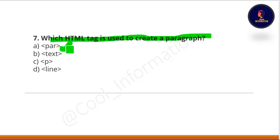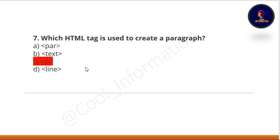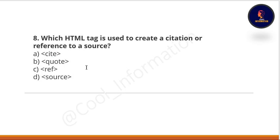Next question: which HTML tag is used to create a paragraph? Options are: par tag, text tag, p tag, or line tag. The correct option is C — p tag.